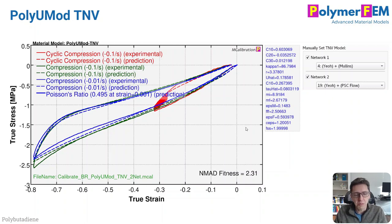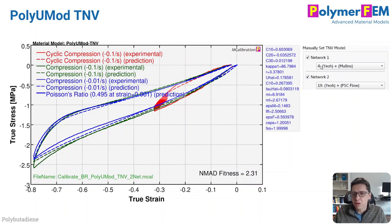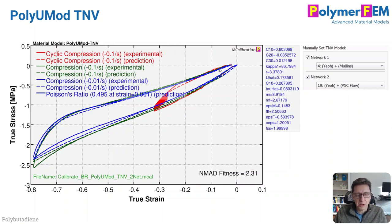Here is the second-best model on my list: the PolyUMod TNV model. This is the one that usually wins in these comparisons. In this case I used two networks: network one uses a YO plus Mullins damage, and network two uses a YO plus a specific flow-type element. It looks somewhat similar to the previous PRF model case. The fitness is a little bit better and it captures the data reasonably well.